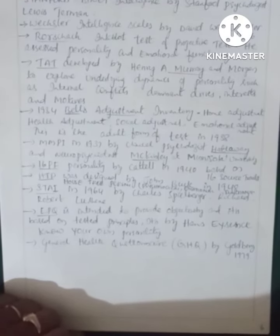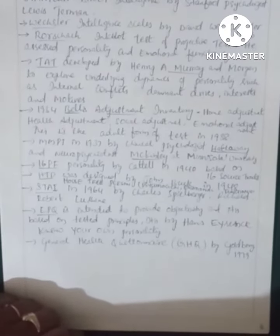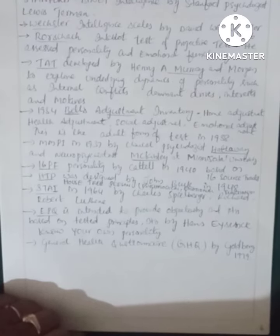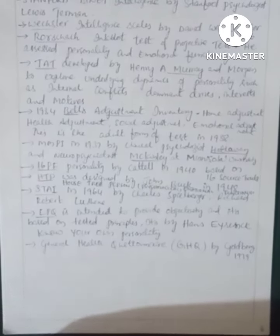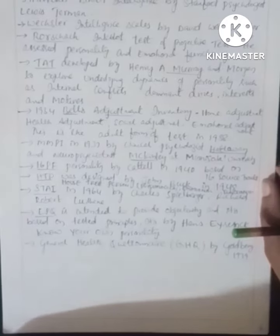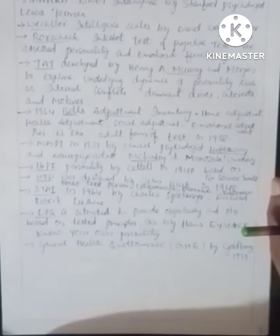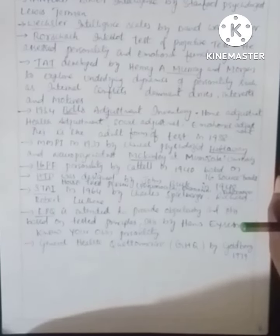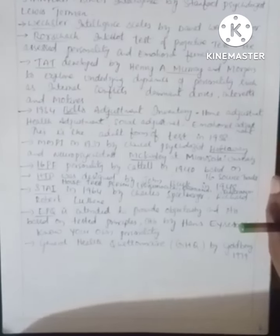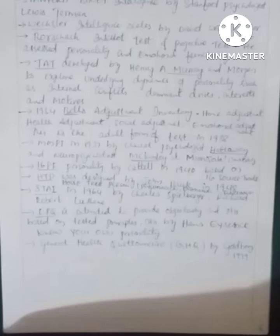Other tests include the 16PF Personality Test by Cattell, the HTP — House-Tree-Person Test — which measures psychological and emotional functioning by John Buck, the STAI — State and Trait Anxiety Inventory — by Spielberger, the EPQ — Eysenck Personality Questionnaire — by Eysenck, and the General Health Questionnaire (GHQ) by Goldberg. These are the key developmental and historical trends related to clinical psychology. Thank you.